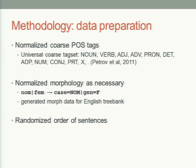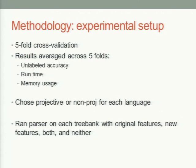To prepare the data, we normalized the coarse POS tags using a paper by Petrov et al. that suggests a universal tag set. Where there was only one set of POS tags, we generated coarse tags; where coarse tags already existed, we normalized them to the same tag set. We normalized the morphology into the form of attribute-value pairs, for instance 'case=nominative' or 'gender=feminine.' We generated morphological information for the Penn English Tree Bank, which has none. We randomized sentences and used five-fold cross-validation.